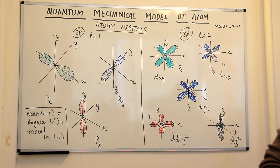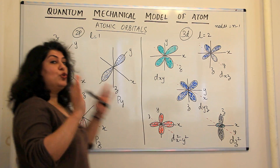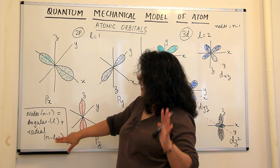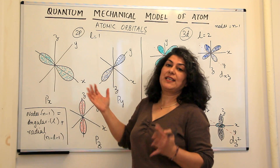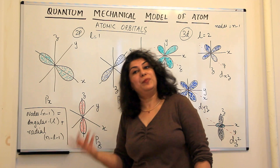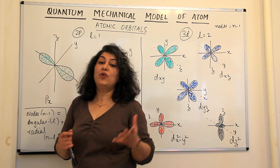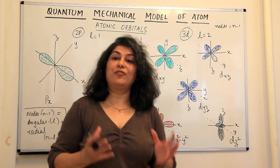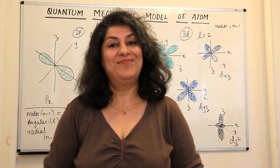So the total number of nodes present in an orbital is n-l-1, which is the sum of the angular nodes (given by l) and the radial nodes. We'll cover these nodes in more detail in the next video. But right now, you know the shapes of the P and D orbitals. Please come back for more videos in chemistry. Thank you for watching.